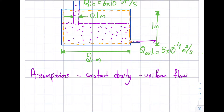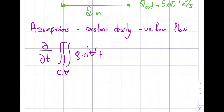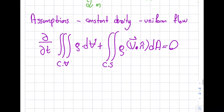With these two assumptions, let me start with the very general formula: the triple integral over the control volume of ρ dV plus the surface integral over the control surface of ρ·V⃗·n̂ dA equals zero. Now, can I just get rid of this first term? No, that would be a major mistake. But since density is constant, I can pull it outside: it's just like taking a constant outside an integral or a derivative.